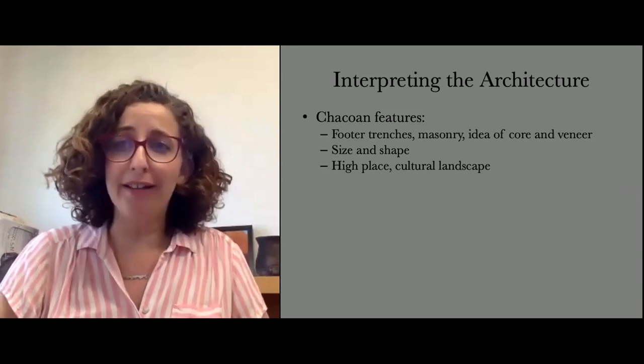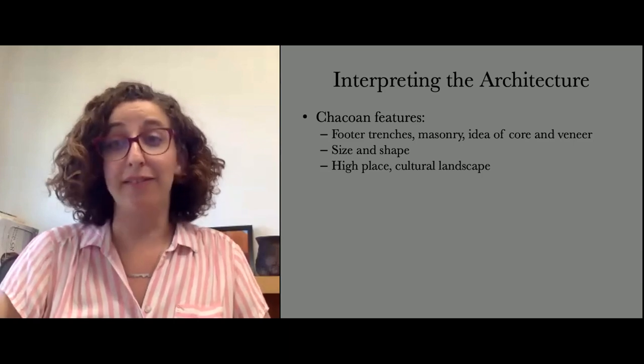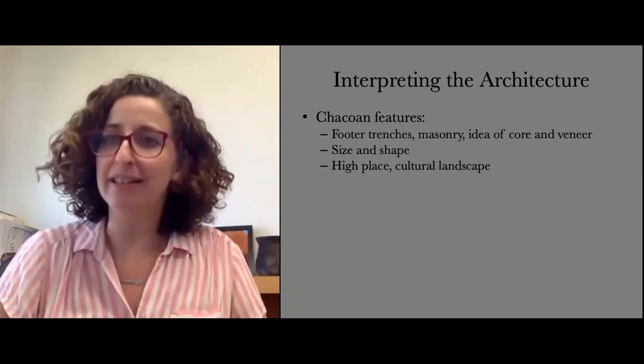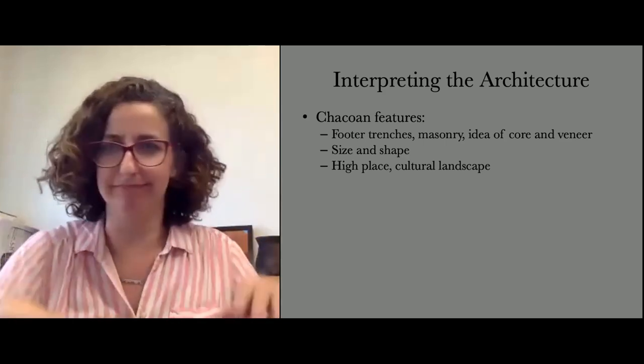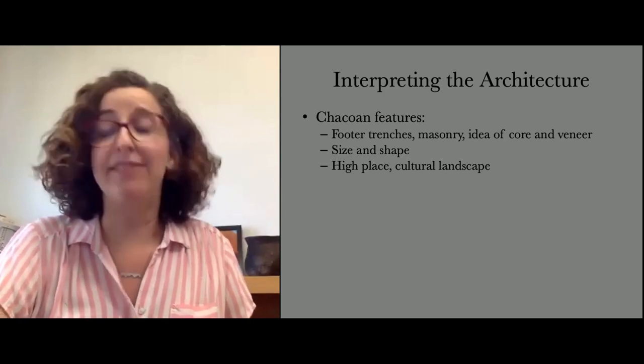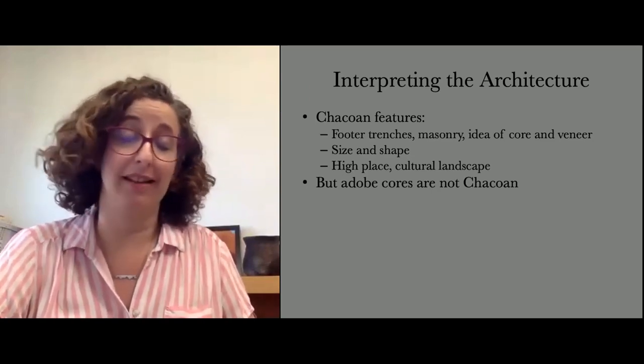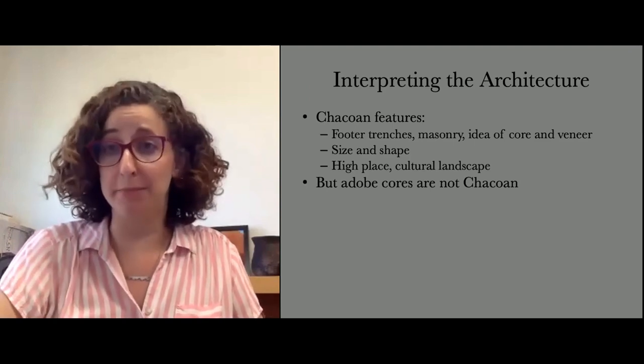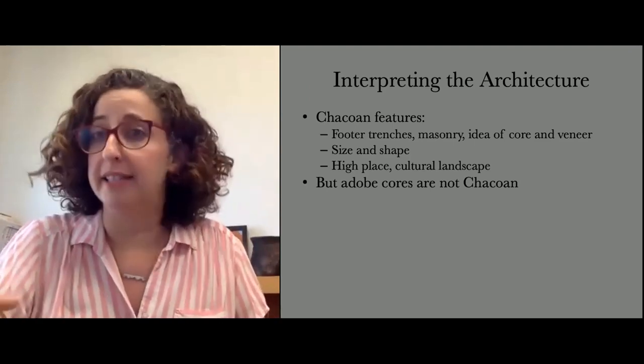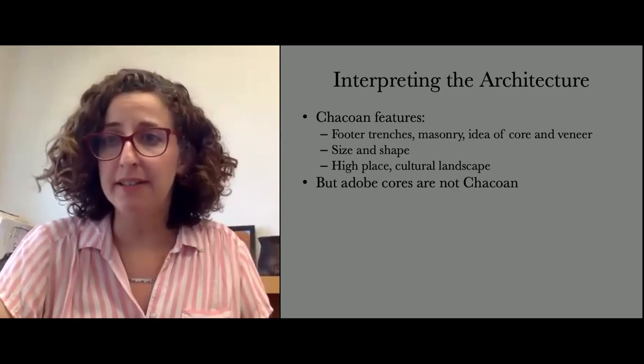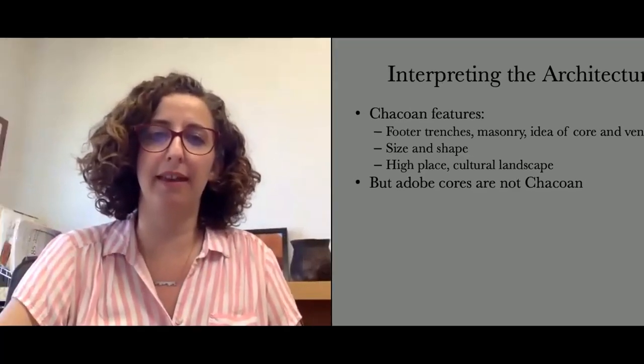To summarize the architecture: we have some really Chacoan-looking features — the footer trenches, masonry even if it's not great, the idea of core and veneer walls, the huge D-shaped structure up on a high place, the whole cultural landscape. All of those things point to Chacoan influence. But the adobe cores are not Chacoan — there's nothing like them anywhere, except for one great house called Bisani near Chaco, but that one did not have the veneers that we have at Aztec North. The combination of masonry veneers with adobe cores seems to be just Aztec North and nowhere else.